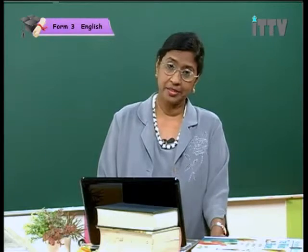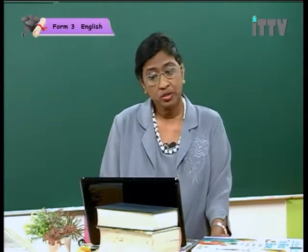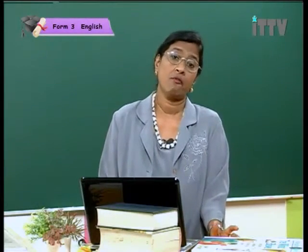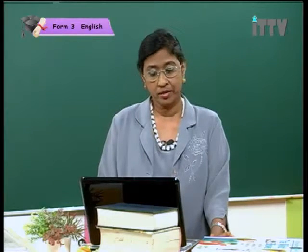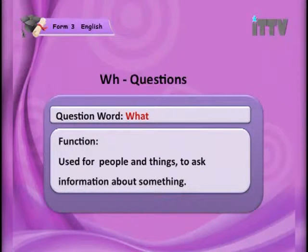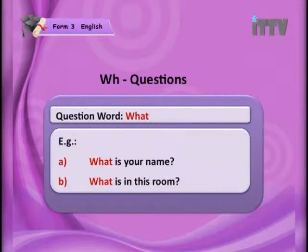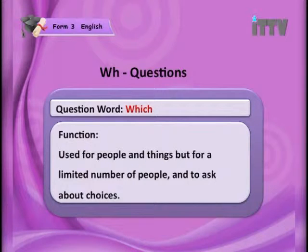When you look at these words, it's like asking for information. 'What' asks about an object, and 'where' helps find out about a location or place. Now look at the question word 'what' — it is used for people and things, to ask information about something. For example, 'What is your name?' refers to a person, and 'What is in this room?' refers to an object.